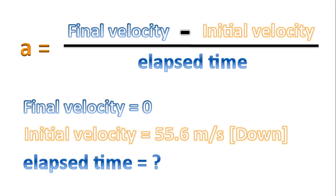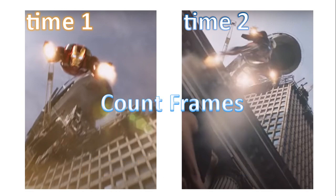What about the elapsed time? So how much time has passed from time one, where he turns on his rockets, to time two, where he comes to a stop? Well, to do this, we're going to count frames.